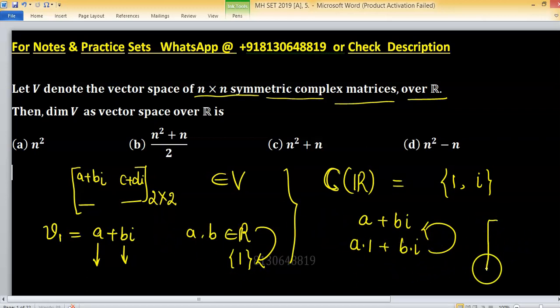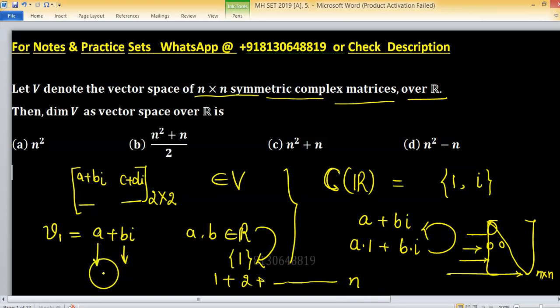So if n cross n complex symmetric matrix, symmetric matrix means above the diagonal and below the principle diagonal elements are the same. Suppose this is first non-zero entry, then 2 non-zero entries, then 3 and then n non-zero entries. So how many total entries we have? 1 plus 2 plus n and so on up to n. And this sum we obtain with the help of sum of first natural numbers n times n plus 1 divided by 2.